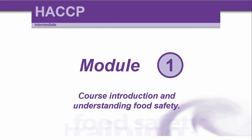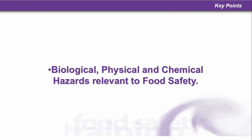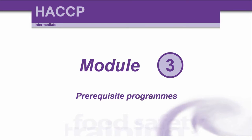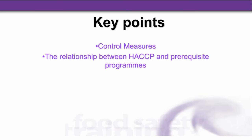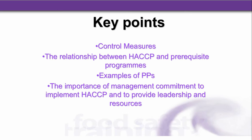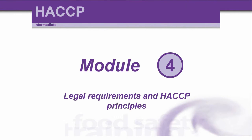Let's recap. This course comes in 14 parts — the first and second parts were together as one video. Lecture one was a course introduction and understanding of food safety. Module two covered hazards, with key points being the biological, physical and chemical hazards relevant to food safety. Module three was about prerequisite programs, covering control measures, the relationship between HACCP and prerequisite programs, examples of prerequisite programs, and the importance of management commitment. That took us on to module four: legal requirements and HACCP principles.